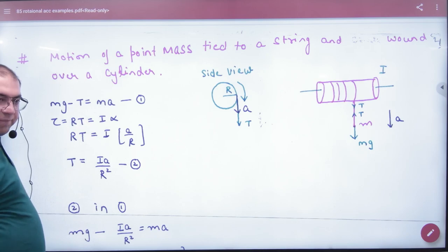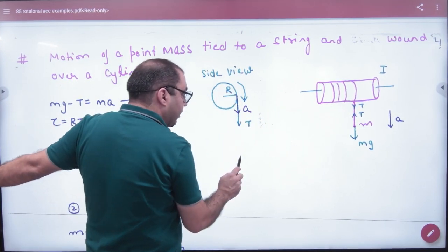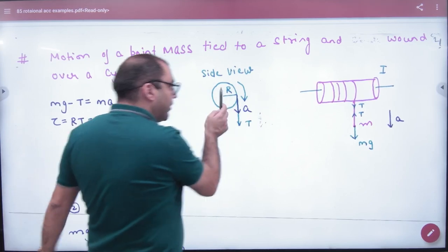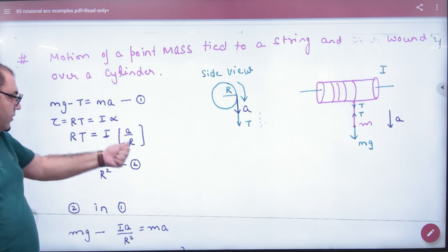What is torque? I times alpha. Now because the acceleration A will be tangential, alpha can be written as A by R. We have used this earlier, and alpha is A by R.